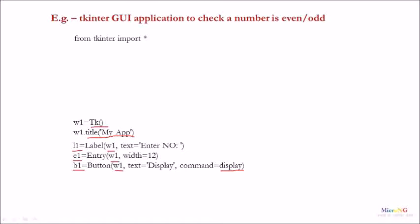So we need to define a method which is named as display, that will get called when the button b1 is getting clicked.